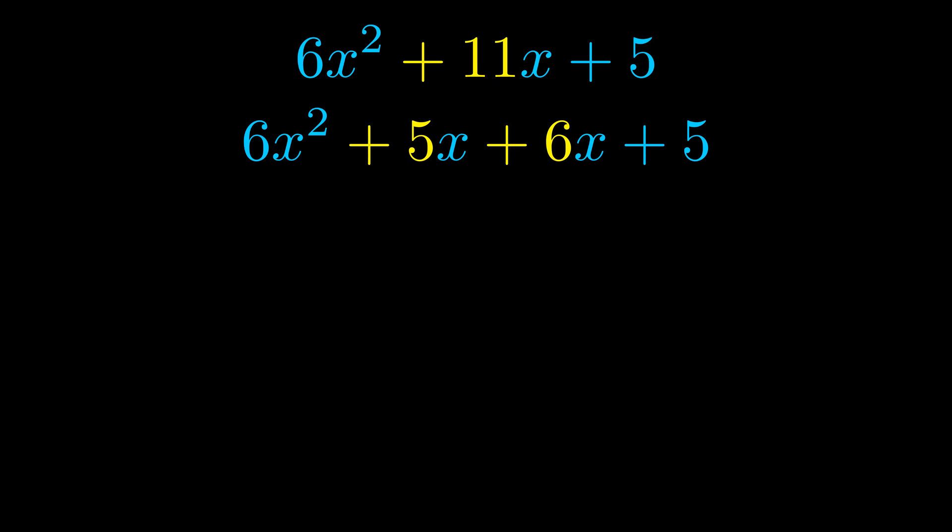Once we've done this, we go ahead and we put parentheses around the first term and the last term. And we do that so that we can take the greatest common factor out of both terms.